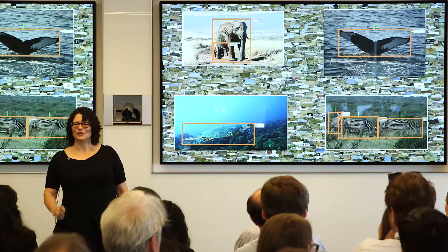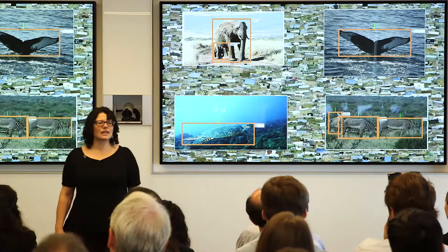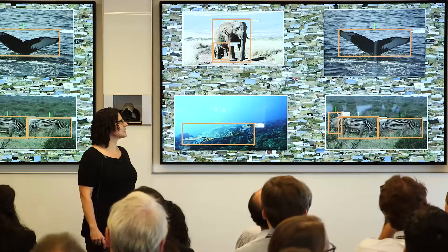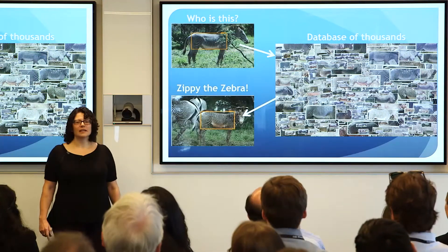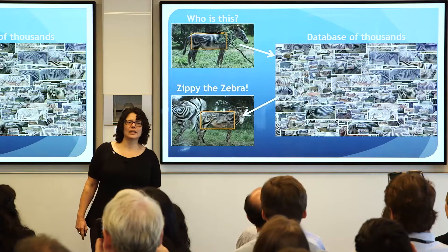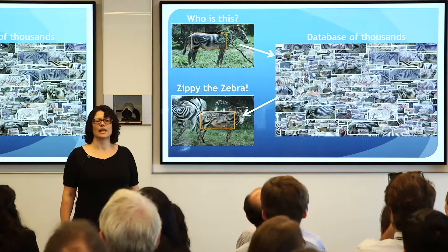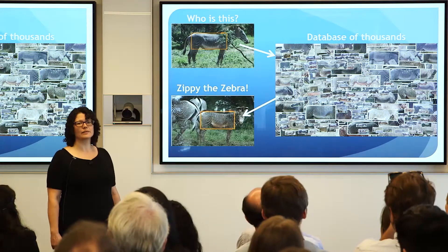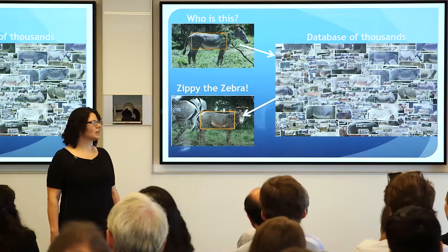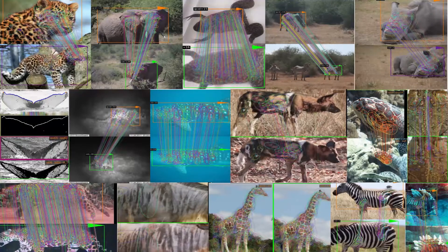Not only can we identify the species, we're able to tell that this isn't just any zebra, whale, turtle, or elephant — this is Zippy the zebra and Terry the turtle and Willie the whale. We've developed algorithms for recognizing individual animals because they're like walking fingerprints. We can do this for any striped, spotted, wrinkled, or notched species, or species with uniquely identifiable shapes — like the fluke of a whale — and now we're working on elephant ears.